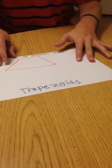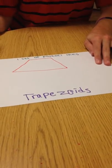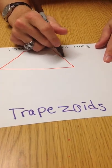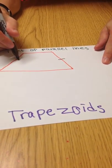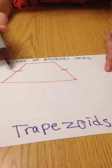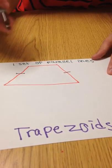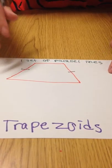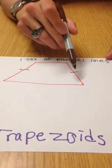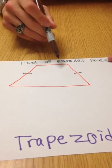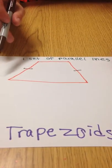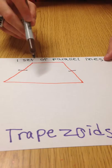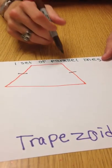The last quadrilateral that I am going to demonstrate in this video today is the trapezoid. The trapezoid will have equal marks here and here, but it also has one set of parallel lines. Now, don't let this trick you, because parallel lines can be parallel to each other, but they do not need to be the same length to be parallel.